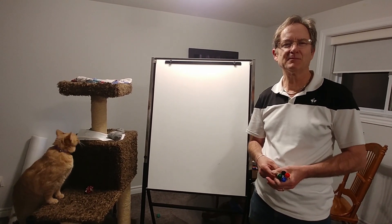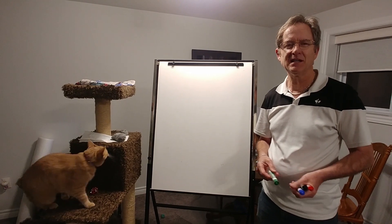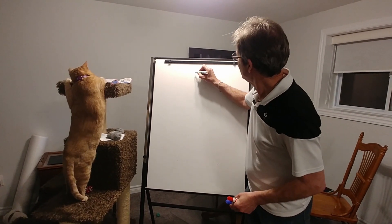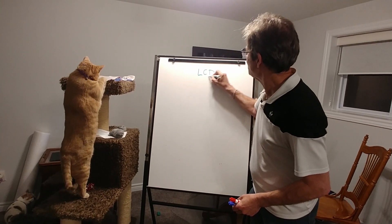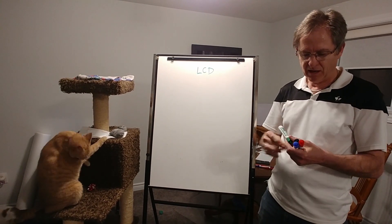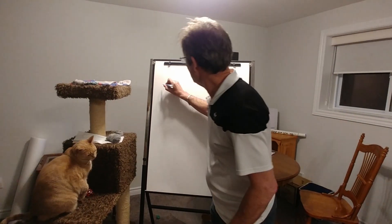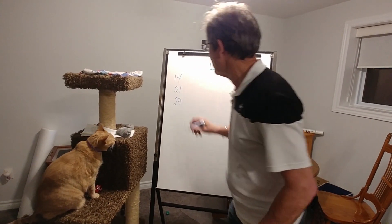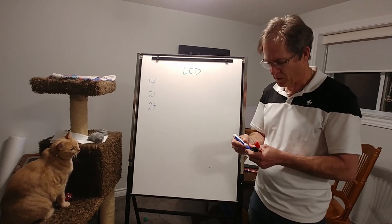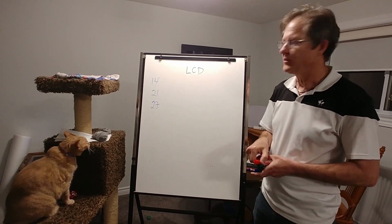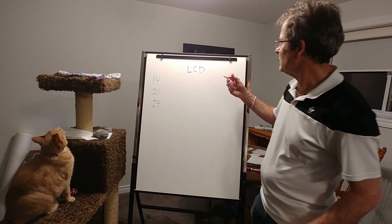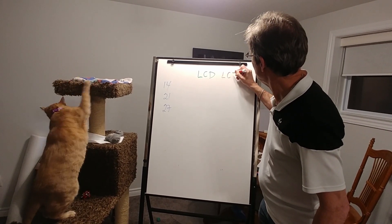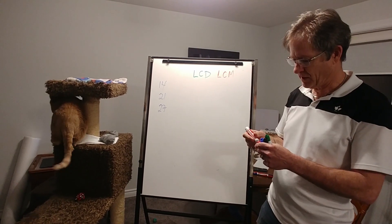Today I'm going to be talking about adding and subtracting fractions again because we need to get a common denominator. The lowest common denominator is preferable. So let's say you have the following three denominators: 14, 21, and 27. We want to find the smallest number that those three numbers go into. You can call that the lowest common multiple — same thing.